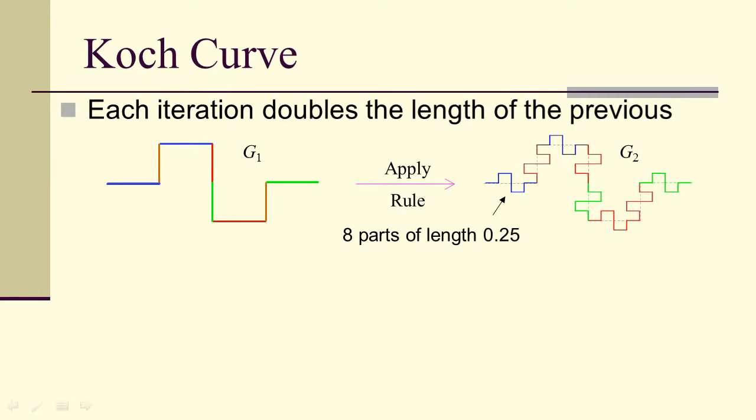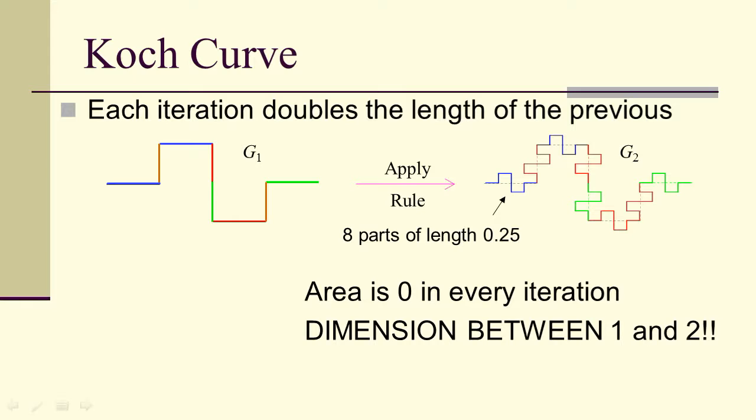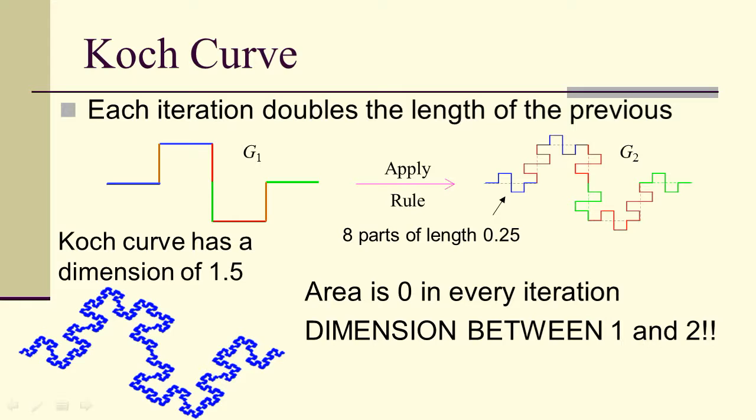Notice that each iteration doubles the length of the previous, because there are eight parts and each part is a fourth as long as the original. The area is zero in every iteration, but in the limit, the length goes to infinity. It has infinite length and zero area. Infinite length means it's more than one-dimensional. Finite, or zero area, means it's less than two-dimensional. Therefore, the Koch curve has a dimension between one and two. In fact, it has a dimension of 1.5. That's why I like to use it. It shows you what's halfway in between one and two.